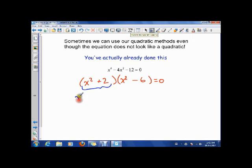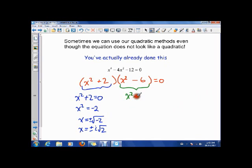Okay, so now let's go through our solutions. Either this factor is 0, which means that x squared is negative 2, which means that x is plus or minus the square root of negative 2, which is plus or minus i root of 2. Or this factor is 0, which means x squared is 6, so there's my four solutions, plus or minus the square root of 6, plus or minus i root of 2.